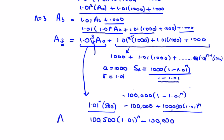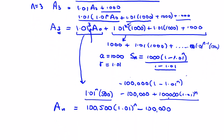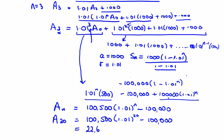How much does she have in 20 years' time? We just put n equals 20: a_20 equals 100,500 times 1.01 to the power of 20, minus 100,000. Typing this into a calculator gives approximately 22,629. Let me double-check that — and that's the end of question four.